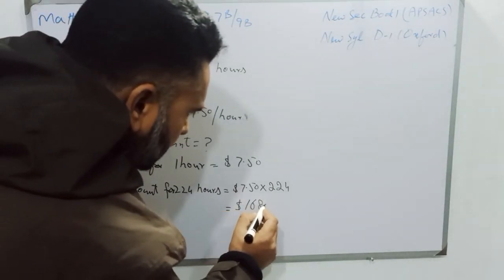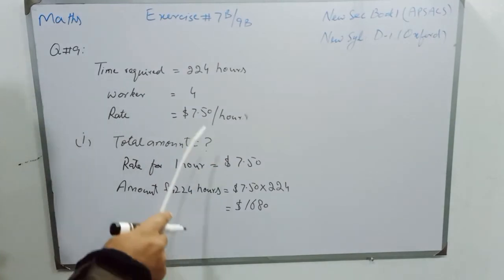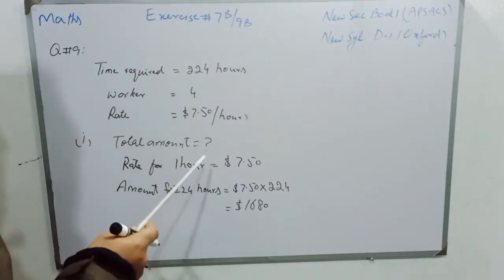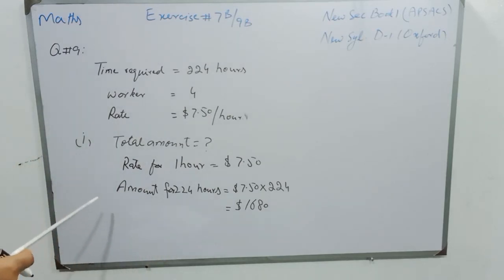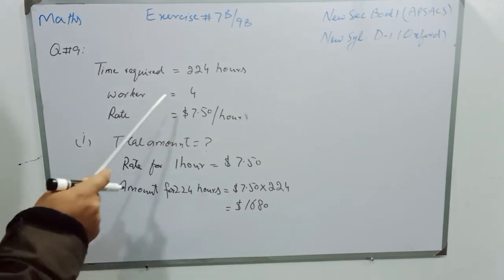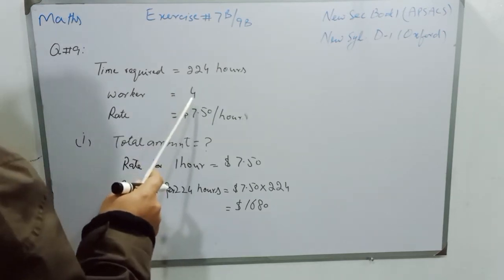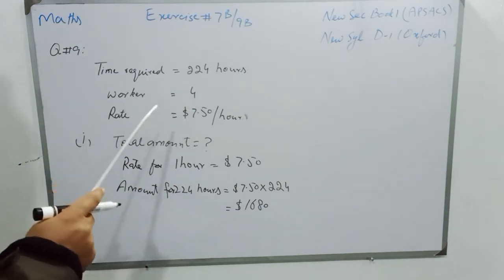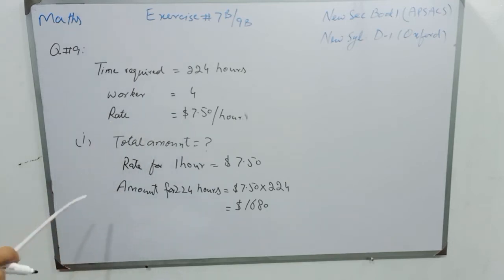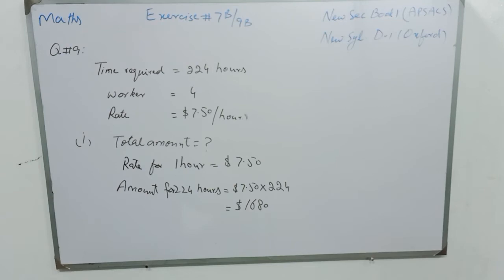$1,680 is required to complete this project at normal rate without overtime. In Part B, we have to find the amount if the project is completed in 4 days by 8 hours at normal rate, and the rest of the time will be paid at 1.5 times the normal rate. I am going to solve the second part now.